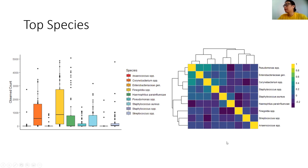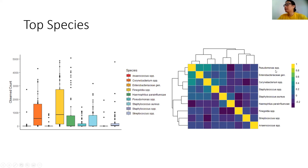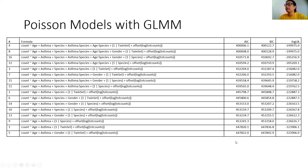Another thing I want to mention is that for sequencing analysis there are a lot of methods. For this one I use relative abundance, which means we look at the percentage of a certain species and how much it takes up the entire total count. There are also other things like alpha diversity or beta diversity used to look at how each species affects others' counts and diversity, but those are not fully explored in this project. First, I ran a generalized linear mixed model with Poisson — I ran about 23 of them — and here are the top ones with AIC.